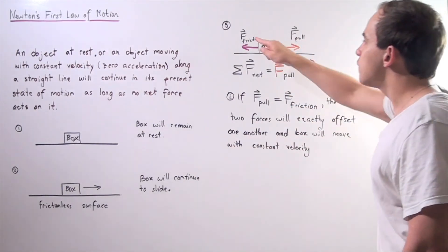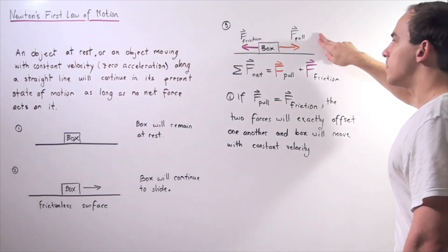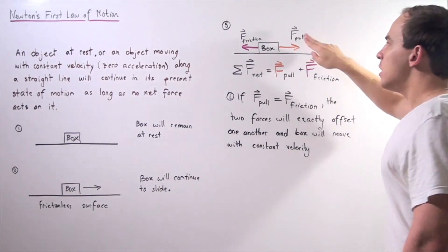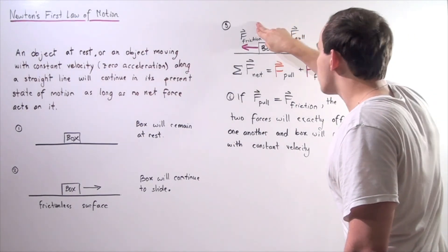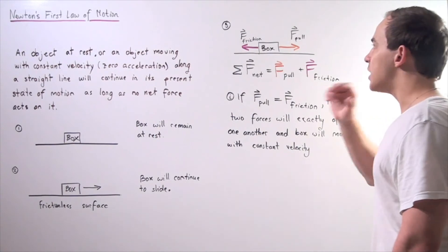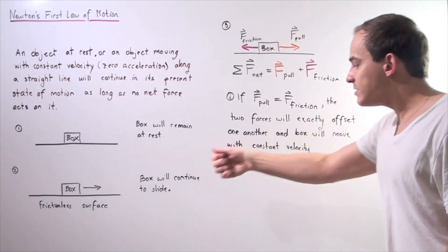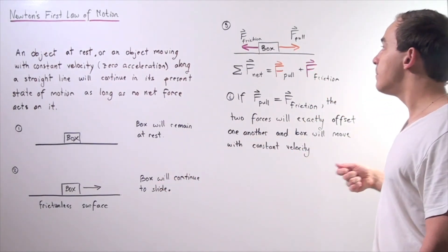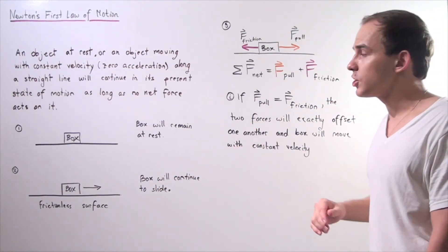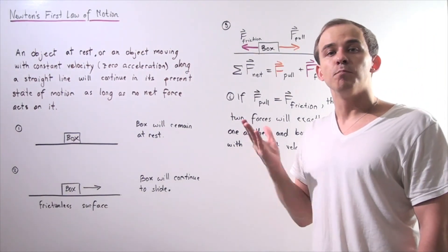Likewise, let's suppose the force of friction is greater than the force of the pull. Now this force is greater, so my object will begin moving in the opposite direction until it stops. Or if my object is stationary and I try pulling the object and my pull force is smaller than my frictional force, my object will not move.